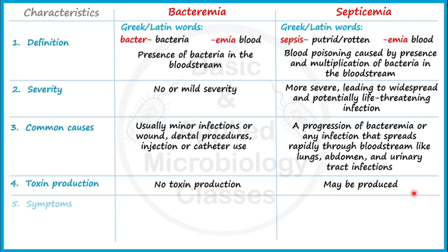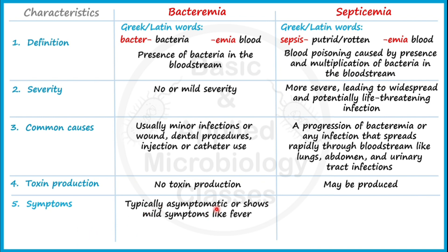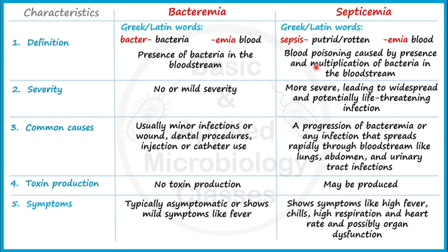The fifth point of difference is symptoms. Bacteremia is typically asymptomatic, showing no symptoms generally, but in certain cases it can show mild symptoms like fever. Septicemia is a symptomatic condition — it shows high fever, chills, high rate of respiration and heart rate, and possibly organ dysfunction.